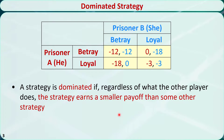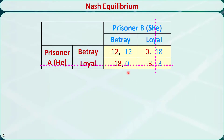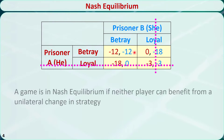A player can eliminate all dominated strategies from consideration. After the elimination, they will end up in the Betray-Betray situation. We call this cell a Nash Equilibrium, which means neither player can benefit from a unilateral change in strategy.